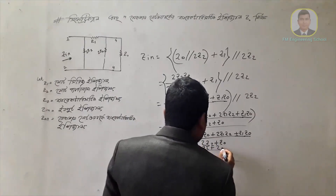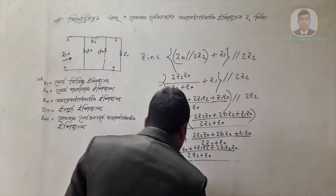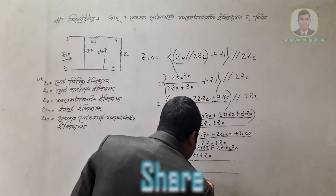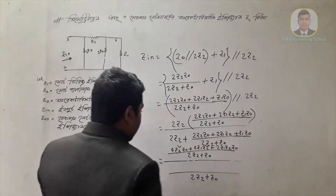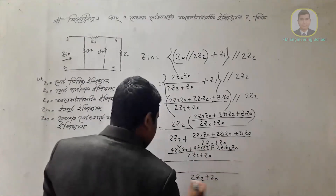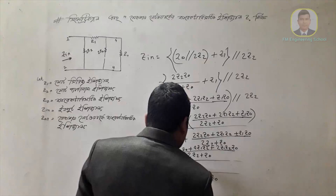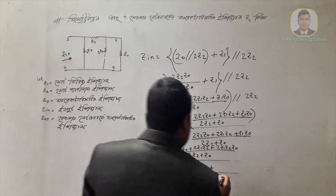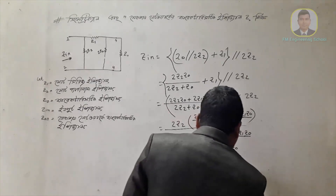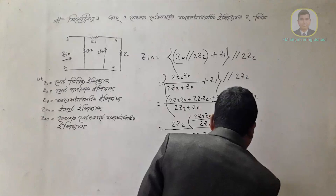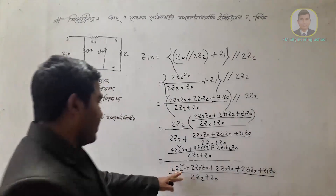We get Z1, Z2, Z0 over 2, Z2, Z0 over 2, Z2, Z0 over 2, Z2, Z0 over 2, Z1, Z2, Z0. So the change is here.